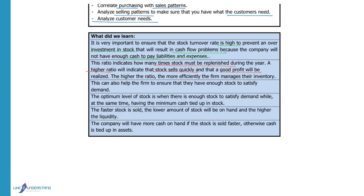A higher ratio can also help the firm ensure they have enough stock to satisfy demand without running out. The optimum stock level is where there is enough stock to satisfy demand but not so much that money is tied up and unavailable to pay expenses and liabilities. The faster stock is sold, the lower the amount invested in stock and the quicker money is available to pay liabilities, resulting in higher liquidity.